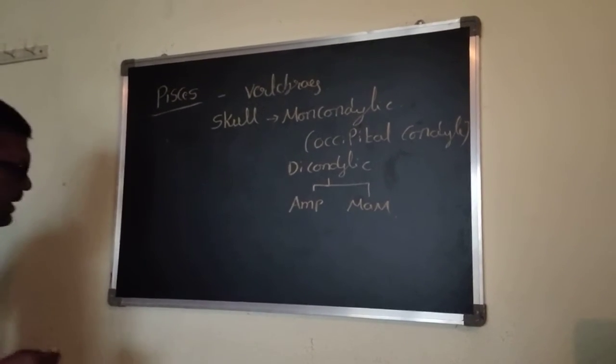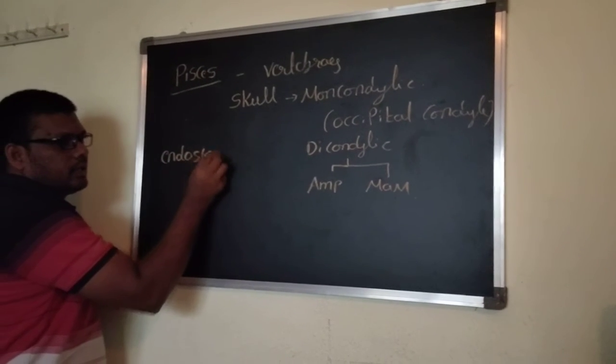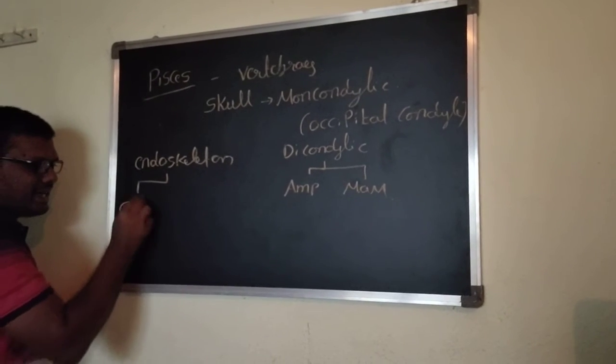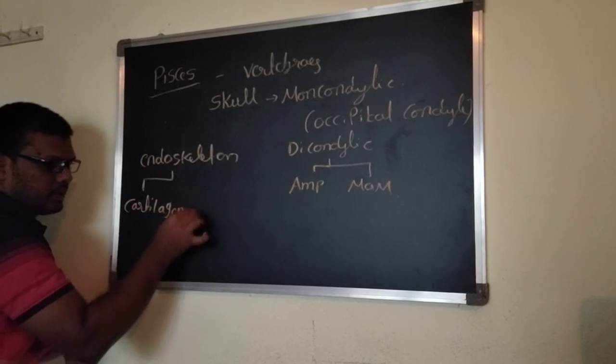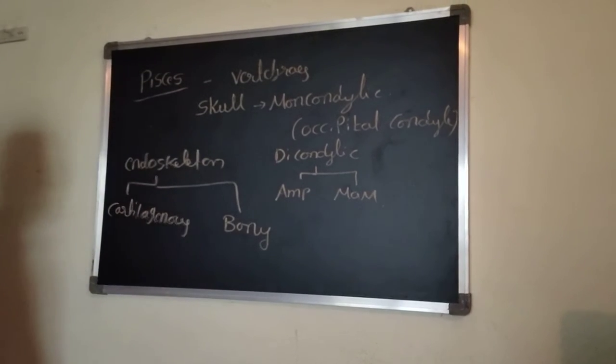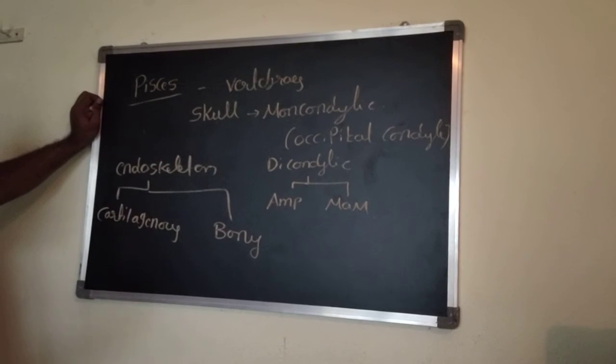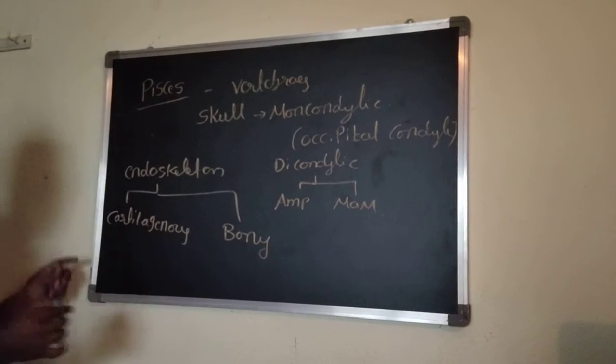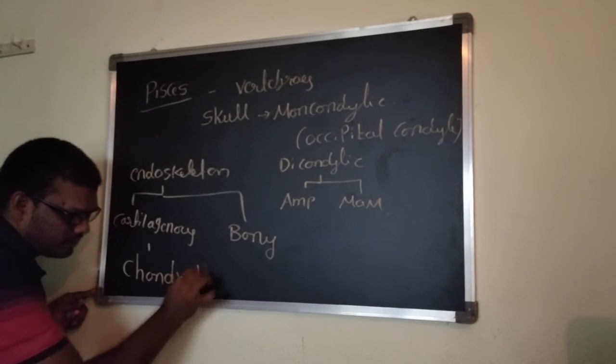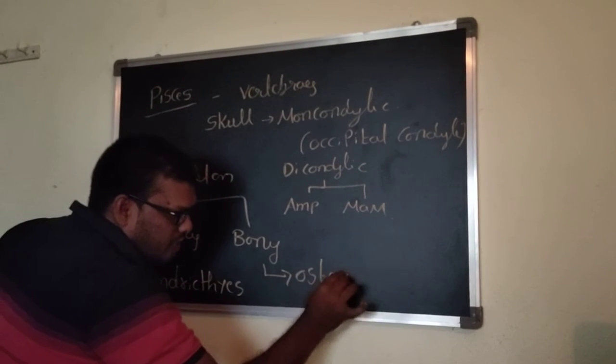That is very important. According to the endoskeleton, two types are present: one is cartilaginous, another is bony. Based upon the endoskeleton, Pisces can be classified into two types: Chondrichthyes and Osteichthyes.